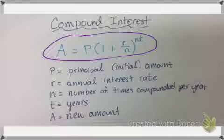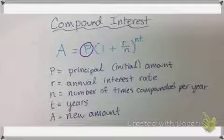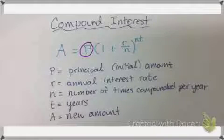So this P value is called the principal, which is really just the initial amount. So it's your starting amount, but it has a fancy name which is called principal.